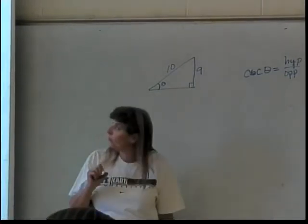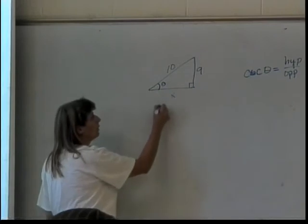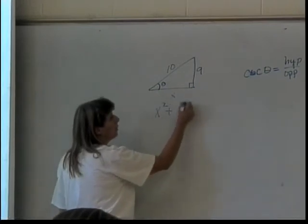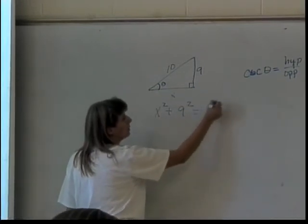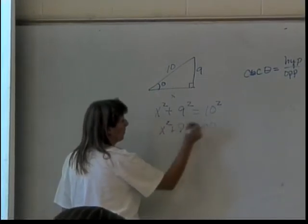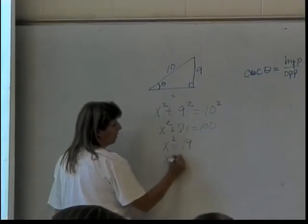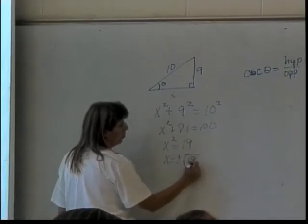We'll label it. Have I used the letter X? No, I'm using theta. So, I'll call it X. So, X squared plus 9 squared equals 10 squared. X squared plus 81 equals 100. So, X squared equals 19. So, X equals plus or minus the square root of 19. Which one is it?